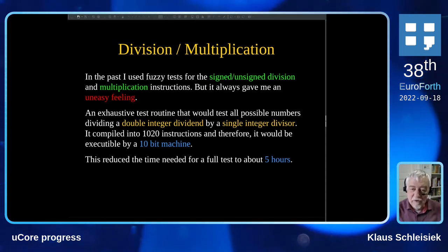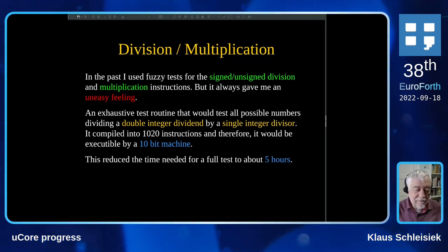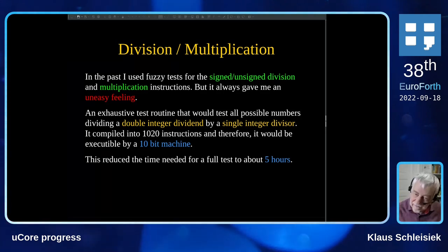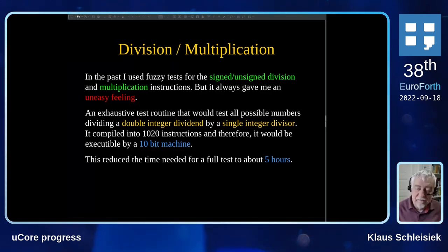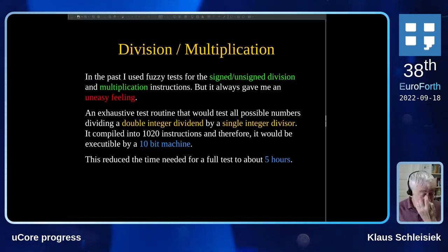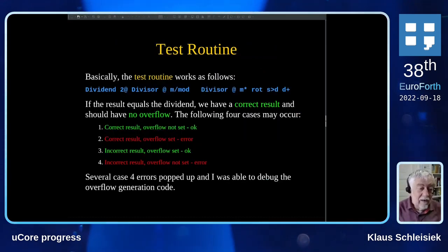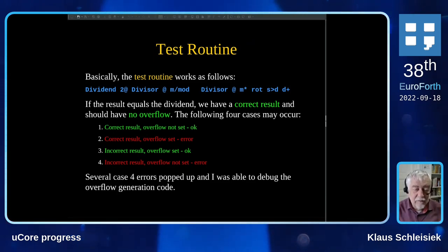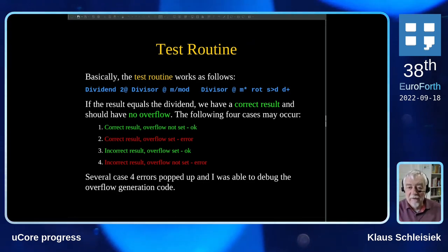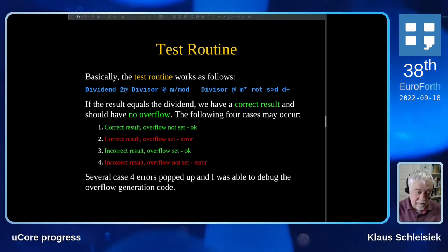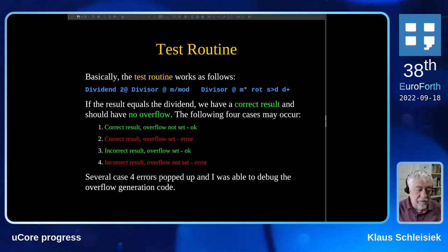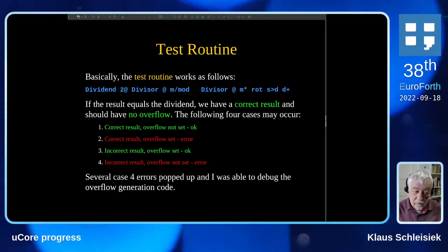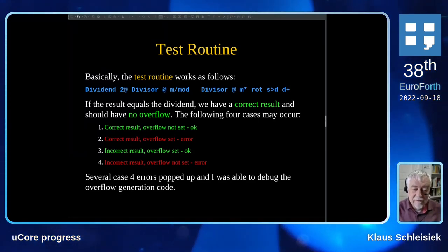That test routine compiled into 1,024 instructions, and therefore it would be executable by a 10-bit machine. That's what I did — I made a 10-bit machine to execute exactly these tests. This reduced the time needed for a full test, meaning 2 to the power of 30 tests, to about five hours, which is manageable. The test routine works as follows: fetch the dividend, fetch the divisor, do divide and mod, multiply the quotient with the divisor, add the remainder, and it should equal the original dividend if numerically correct.